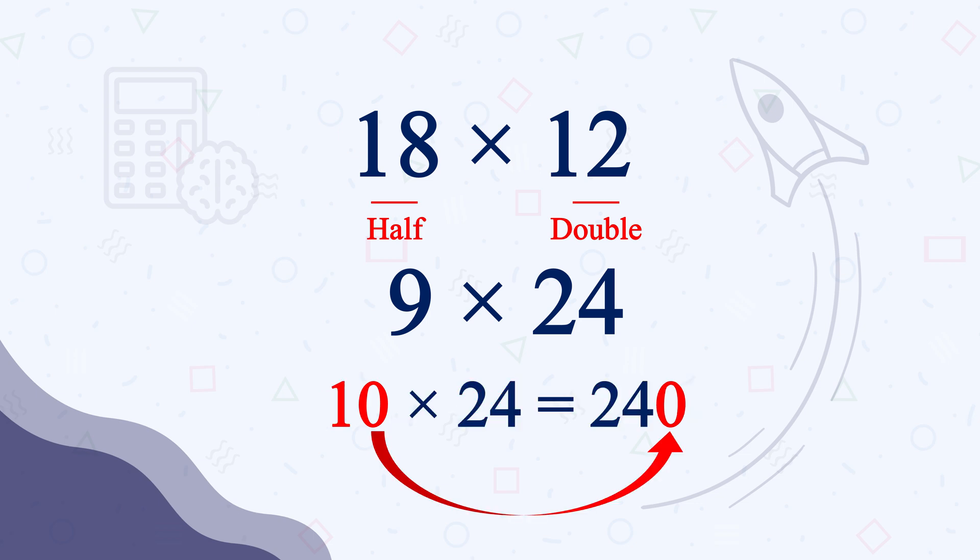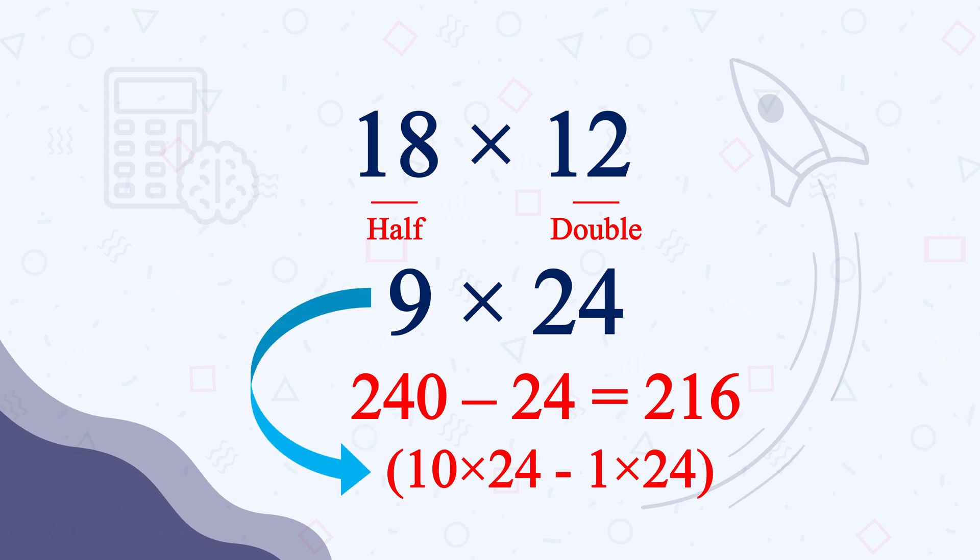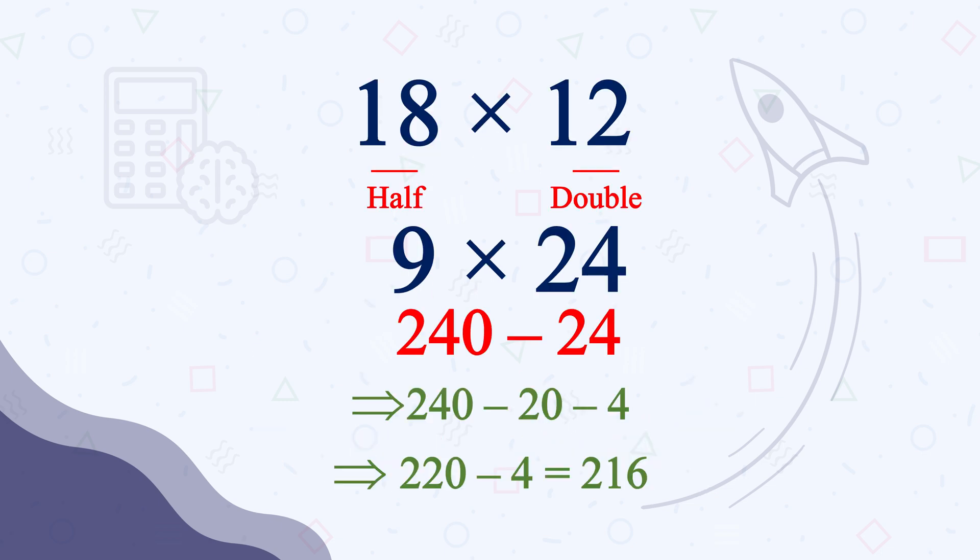Multiplying any number with 10 is very easy. All you need to do is put a 0 at the end. So 10 times 24 is 240, right? Now you just need to subtract 24 from it since we are actually calculating 9 times 24. So 240 minus 24 is 216. Don't do it digit by digit. Break it down for your mind. Make it 240 minus 20, which is 220, and 220 minus 4 is 216.